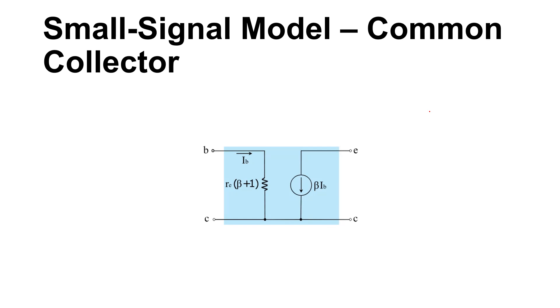Hi, so here is a small signal model for a common collector configuration of the BJT. We call it common collector because there are three pins - the base, emitter, and the collector - and the collector is common with respect to the base and the emitter. Here is your input side, here is your output side of the two port network. We can model or view this network as a two port network.